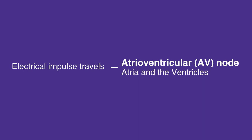After pausing briefly, the electrical impulse moves to the His-Purkinje system, which acts as wiring to conduct the electrical signal into the left and the right ventricles. This electrical signal causes the heart muscle to contract and pump blood.